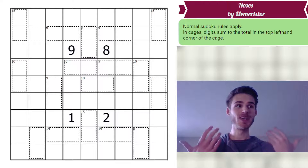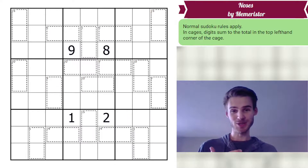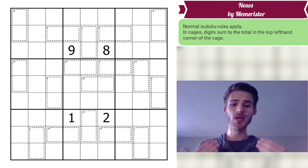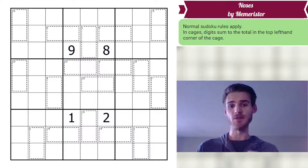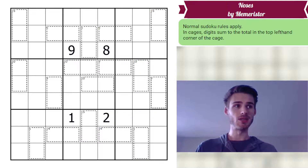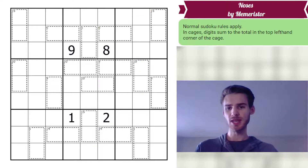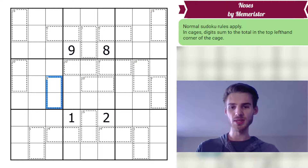I skipped over part of the test solve of the puzzle because I thought it was a little tedious, but it is so important to actually test solve the puzzle a few times before releasing it to the public or giving it to anyone. During my test solve, I realized there were some bits at the end I didn't really like, so I added a nine cage in box four here so that the ending would be a little bit smoother.